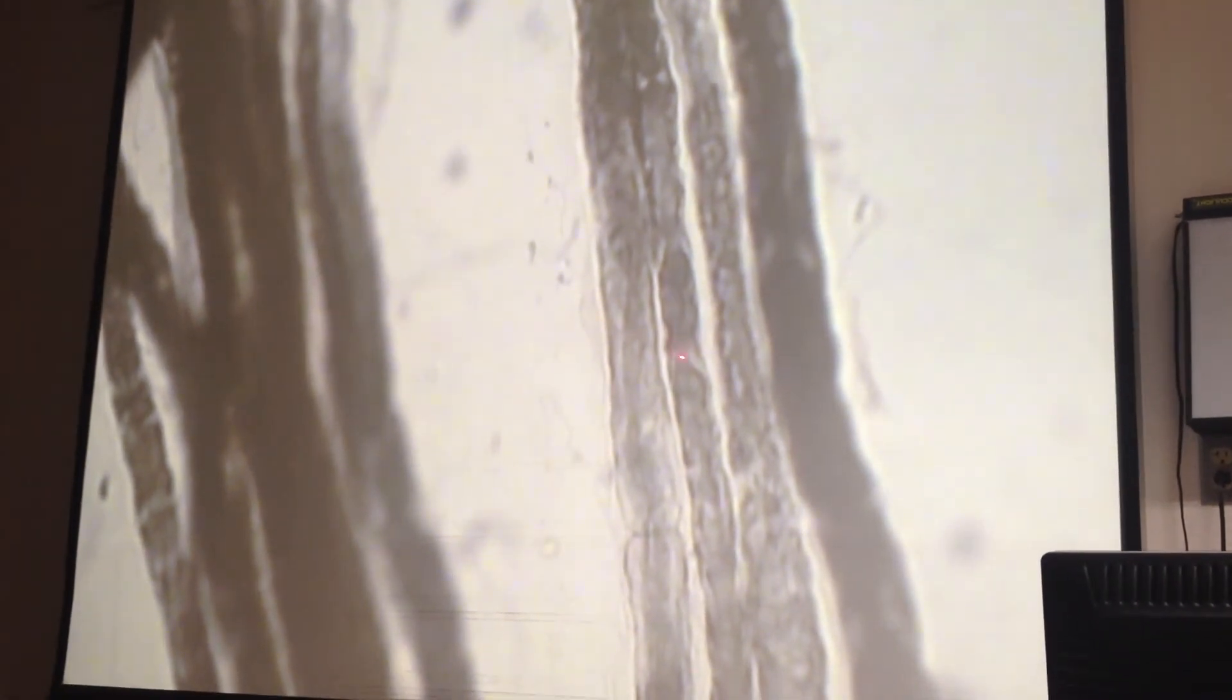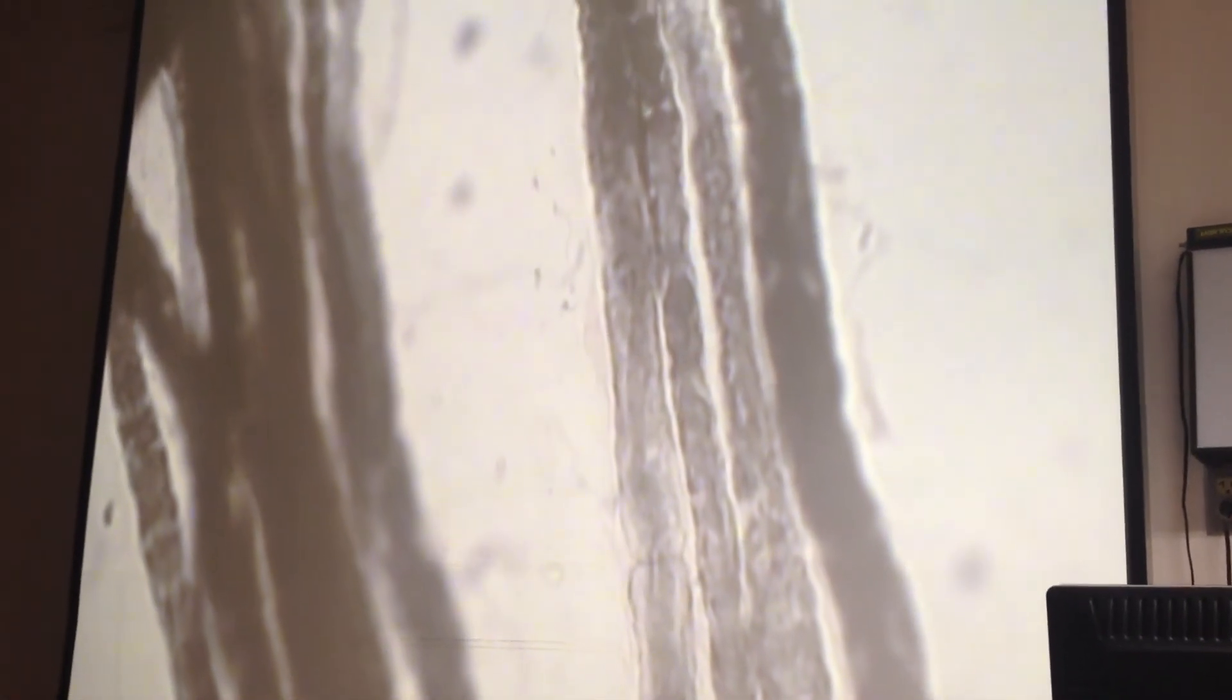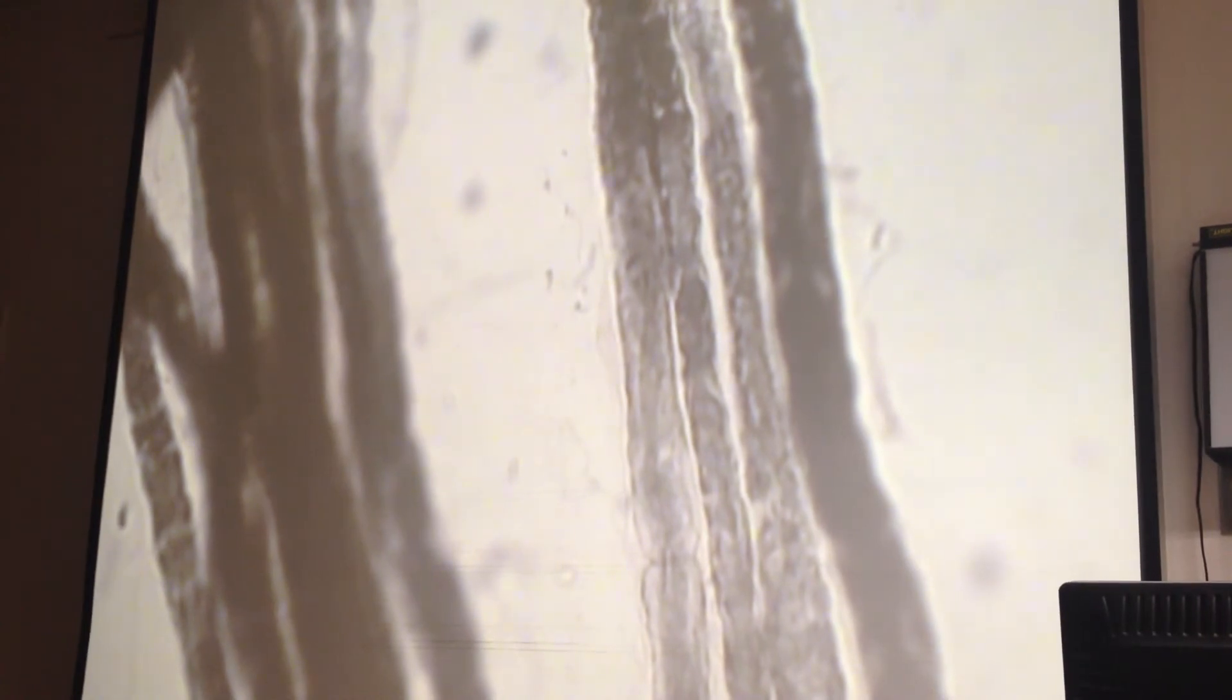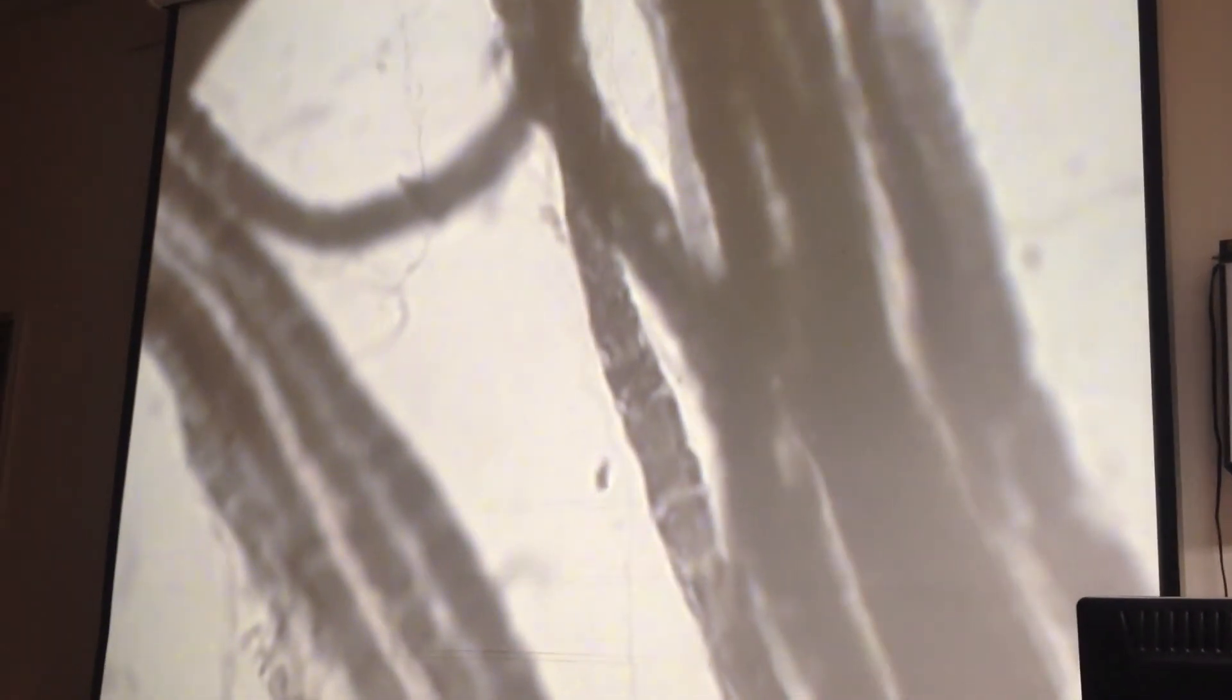A little bit right here you can see, not quite as clear as that one. Yeah, so these are myelinated axons.